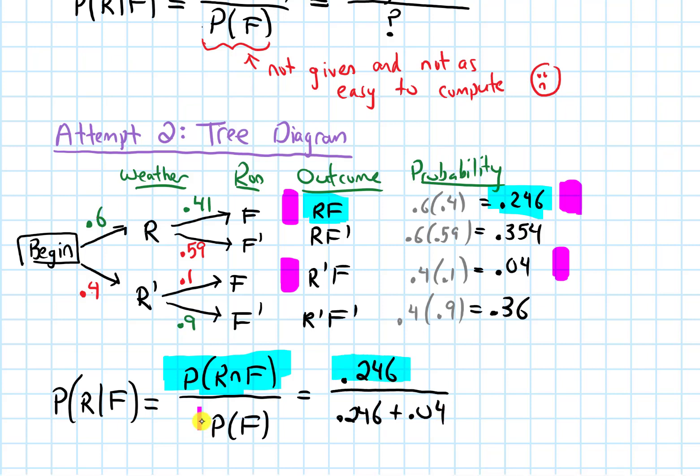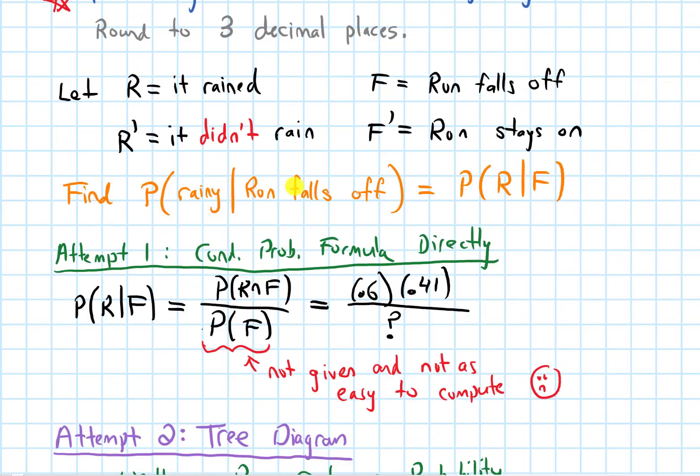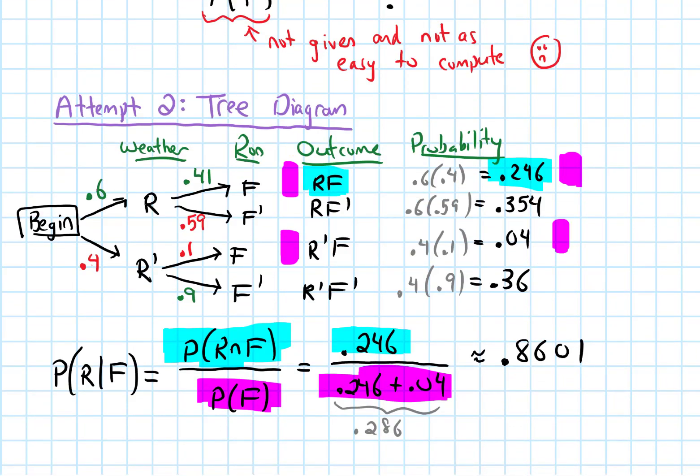Let me highlight this in blue, and this one in pink. The denominator is 0.286, and if I divide using a calculator, we get about 0.8601 to four decimal places. But the question said to round to three decimal places. So rounding this to three decimal places, this would be 0.860. So 0.860, that is our answer.